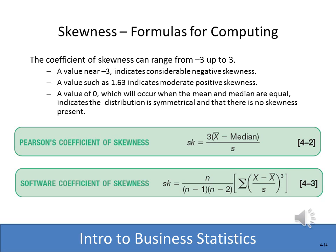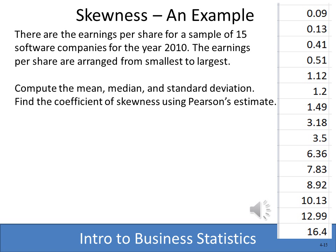This slide introduces two formulas to compute skewness. Pearson's coefficient of skewness is a fairly simple formula using X-bar (the sample mean), the median, and s (the standard deviation of the sample). The other formula is the software coefficient of skewness, which spreadsheets like Excel use. We'll use both and see that they produce slightly different but very close values.